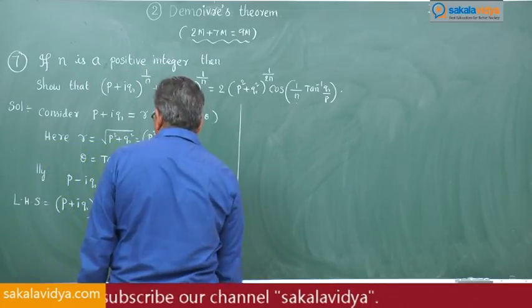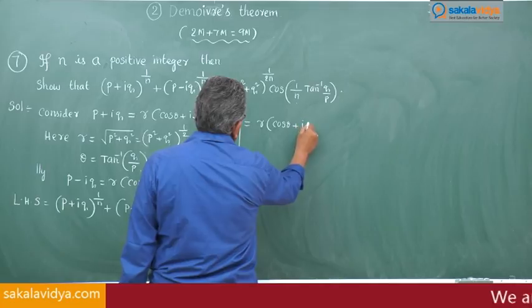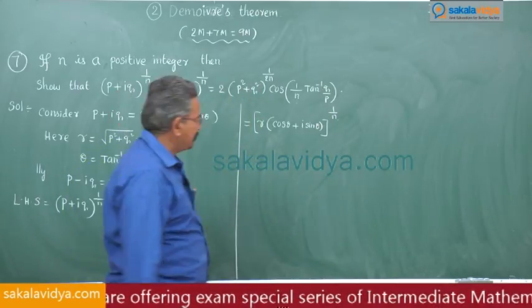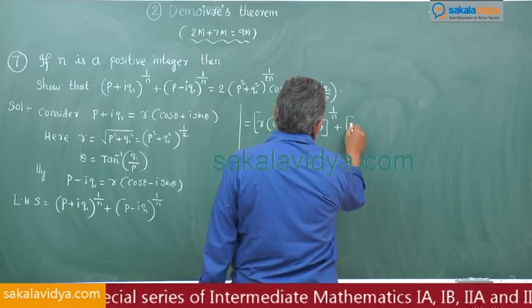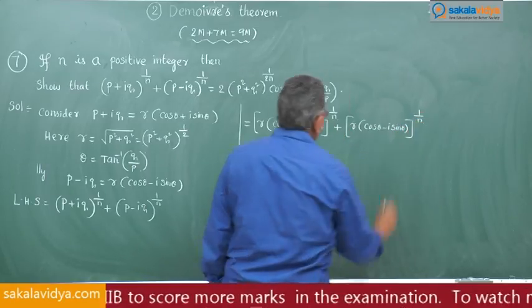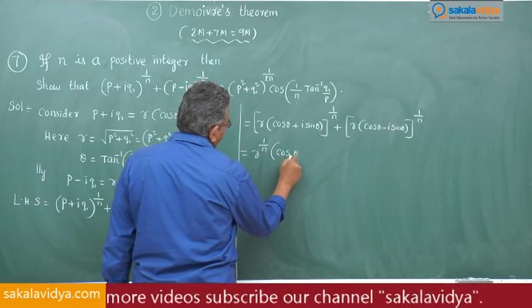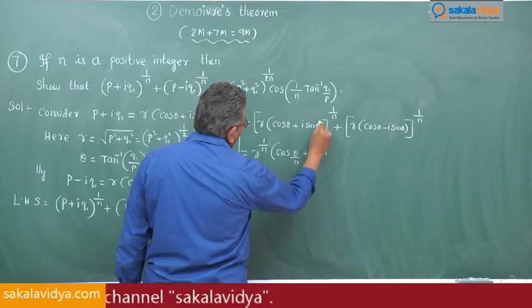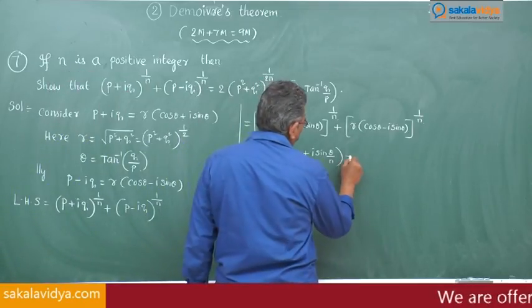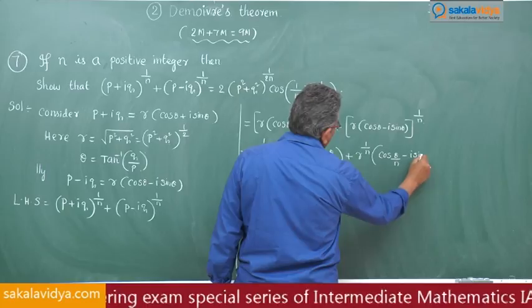Substituting: [r(cosθ + i sinθ)]^(1/n) + [r(cosθ - i sinθ)]^(1/n). By De Moivre's theorem, this becomes r^(1/n)(cos(θ/n) + i sin(θ/n)) + r^(1/n)(cos(θ/n) - i sin(θ/n)).